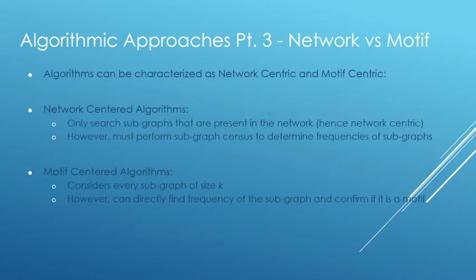So while most algorithms will follow these two steps to find motifs, they can be split up into two general groups. Network centric motifs first generate all possible subgraphs of the given network. And then they have to perform subgraph census for each subgraph to find the valid motifs that pass our significance test. On the other hand, motif centric methods will generate every possible subgraph of size K, but they can then directly find the frequency of every motif through a mapping method, which ends up being much faster than subgraph census. This mapping method works by trying to map the subgraph to as many different places on the graphs as possible. So both methods have their advantages and their disadvantages.